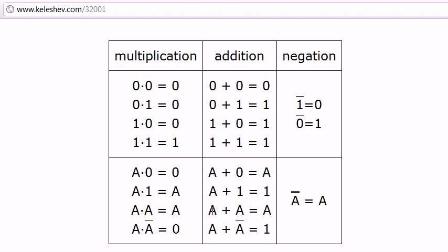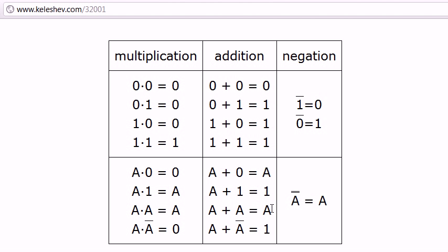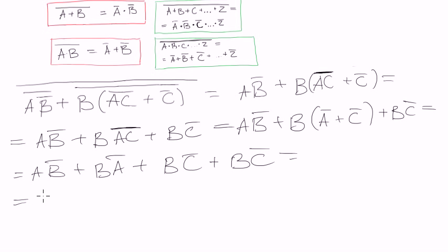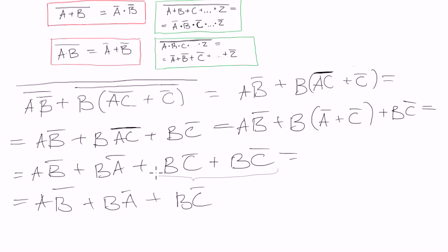Something plus something is the same thing in Boolean algebra - one variable plus the same variable is basically the same. That means B·C negated plus B·C negated is just B·C negated. And so we can rewrite: A·B negated plus B·A negated plus B·C negated, which is B·C negated plus B·C negated. And that's the answer for this example.